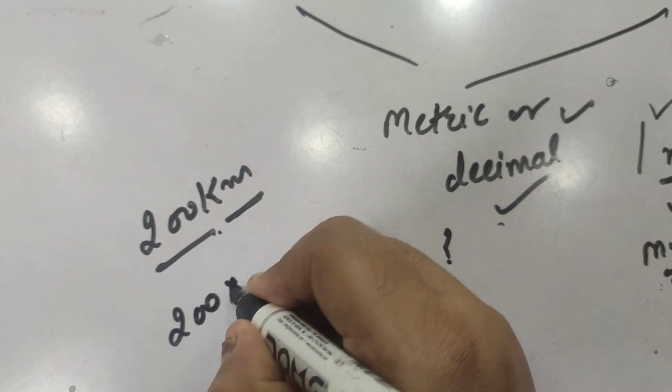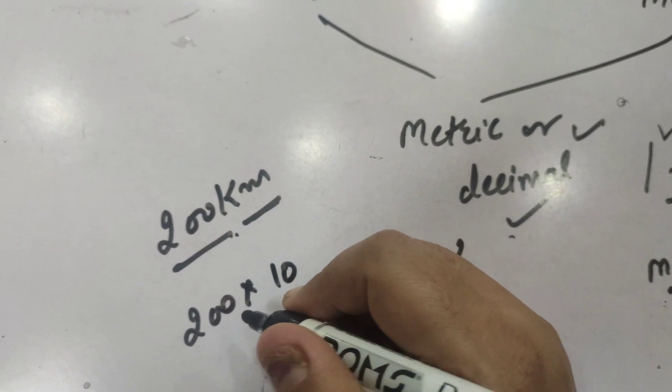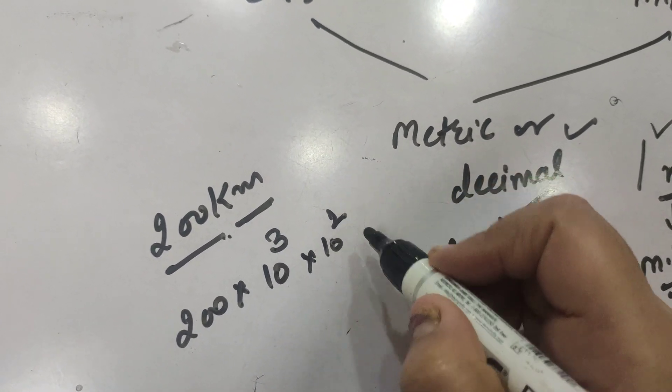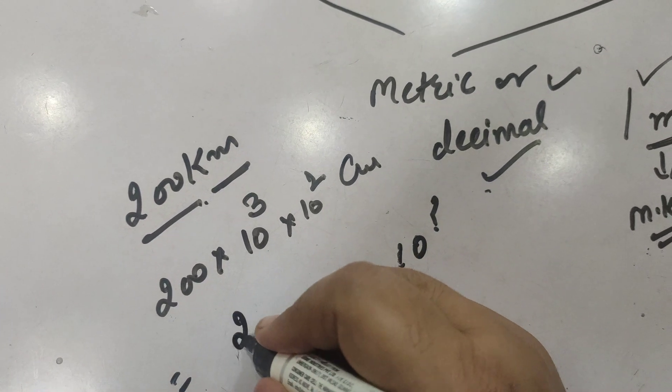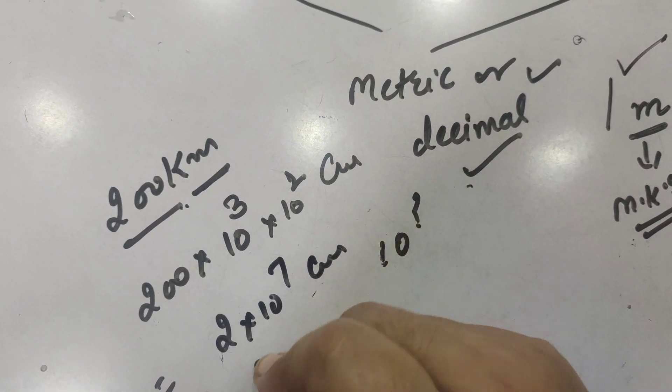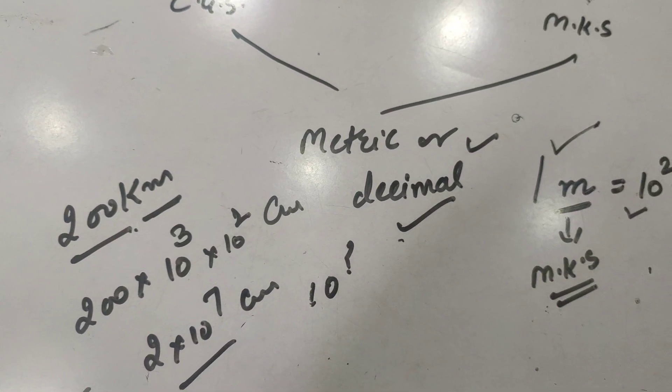as 200 into 10 raised to power 3 for kilometer and 10 raised to power 2 for meter, and then centimeter. So it becomes 2 into 10 raised to power 7 centimeter. So this size is unconvenient to express. Rather, we use meter or kilometer for the length. So this is one of the drawbacks...